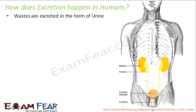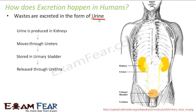Wastes are excreted in the form of urine. The urine we pass at frequent intervals is nothing but waste products — we are getting rid of all the wastes inside our body through urine. Urine is produced in the kidneys, then passes through the ureters to reach the urinary bladder. When enough urine collects, pressure is created and the urine is passed through the urethra and out through the urethral aperture.